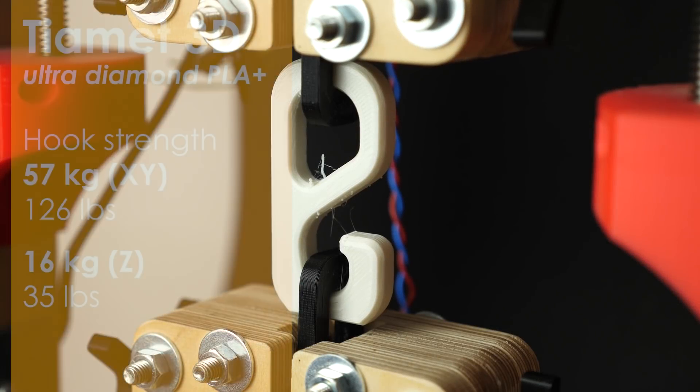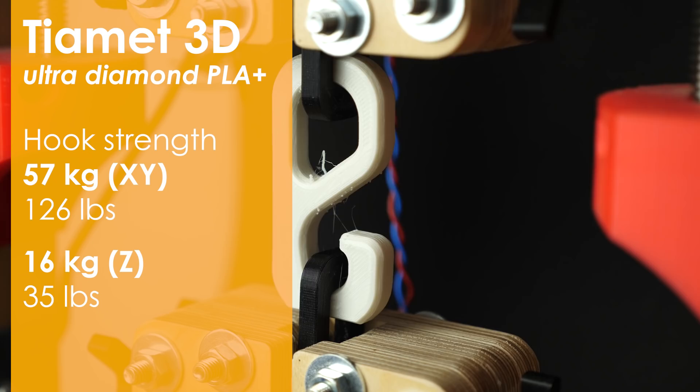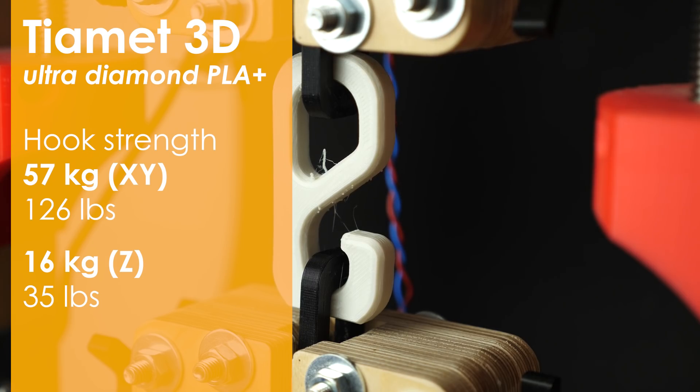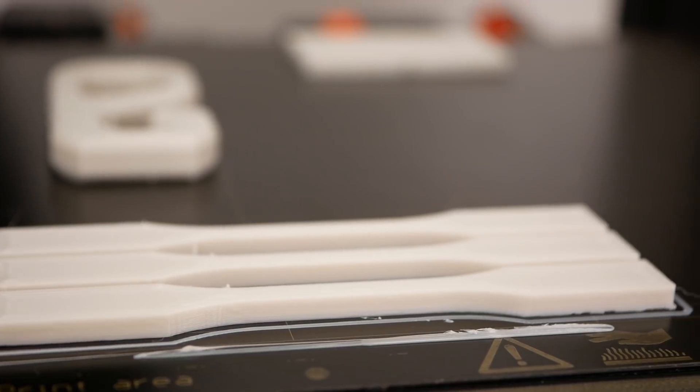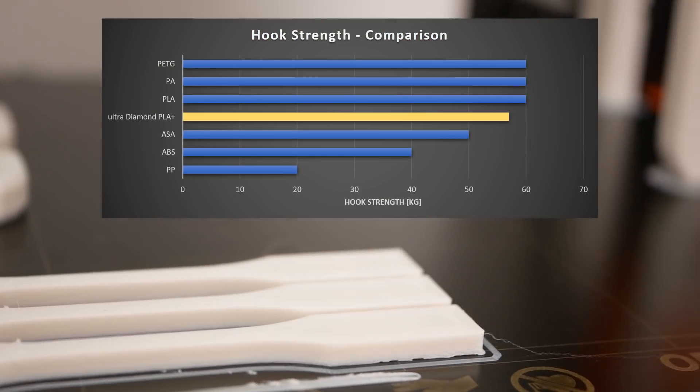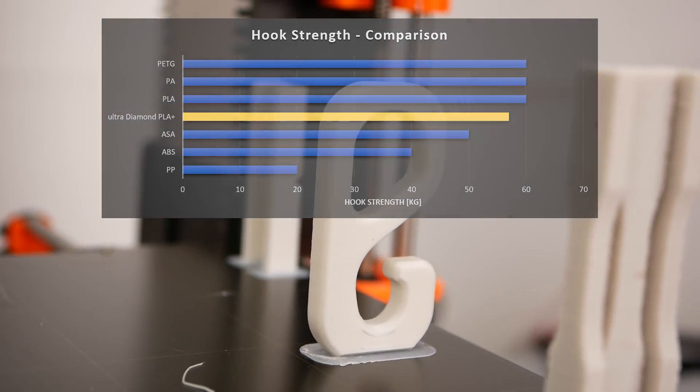My test hooks confirmed the previous results and with a failure load of 57 kg it is slightly weaker than regular PLA but stronger than many other materials. The hook that was printed standing also showed only weak layer adhesion and failed prematurely at 17 kg of load.